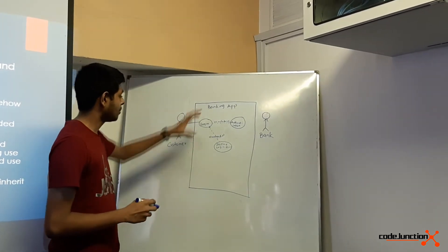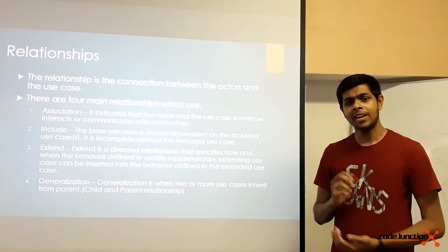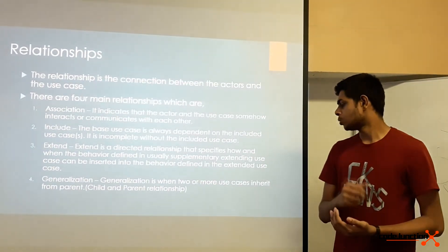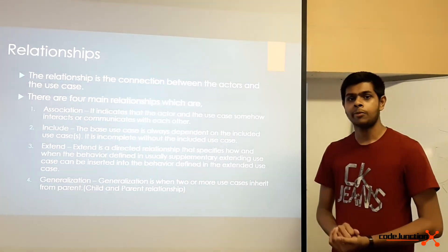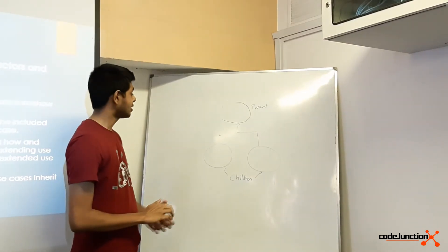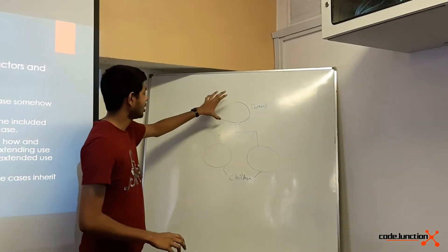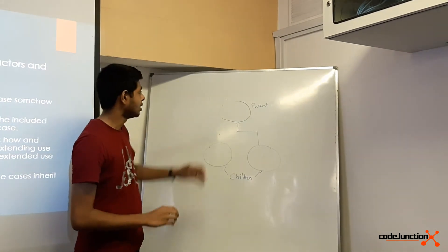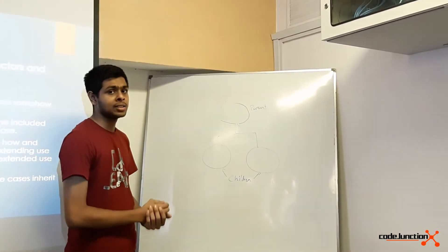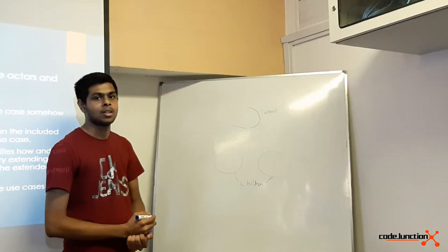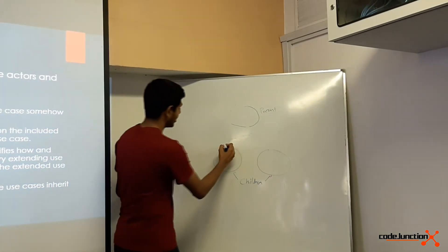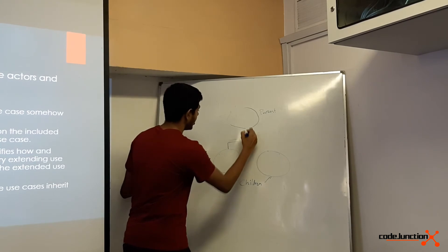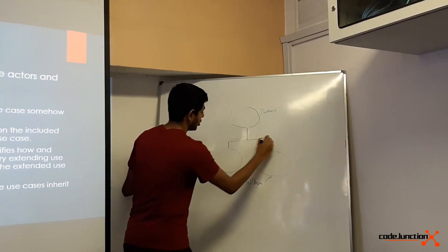Generalization is when two or more use cases or actors inherit from the parent. Generalization is when the children inherit their properties and behavior from the parent. Generalization may happen among actors or among use cases. Generalization is represented by drawing a solid line from the children to the parent and marking it with a triangular arrow.